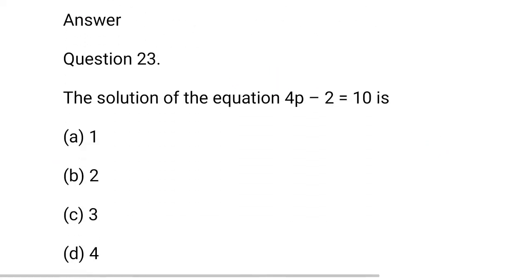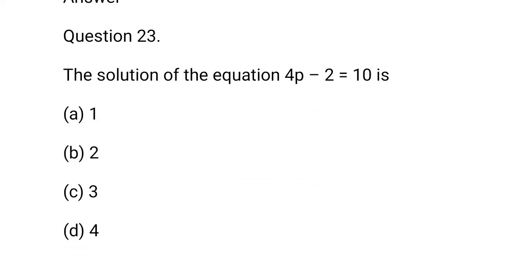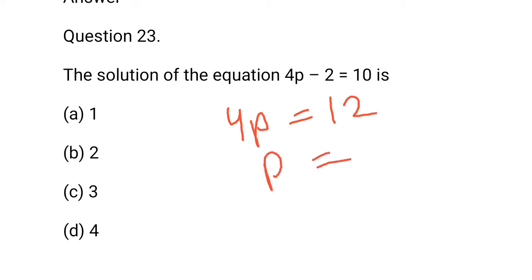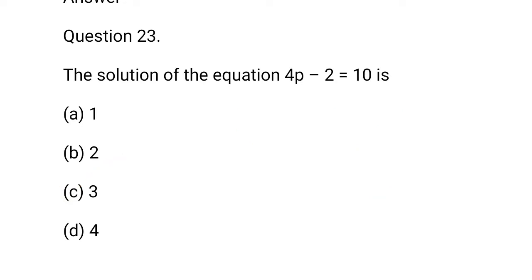Question 23: The solution of the equation 4p minus 2 is equal to 10. So, 4p is equal to 10 plus 2, that is 12. p will be equal to 12 upon 4. So, p is equal to 3. This is correct.